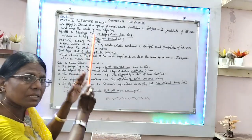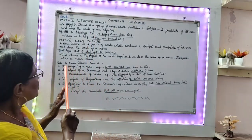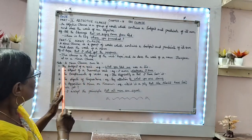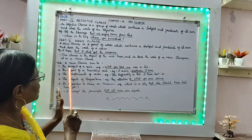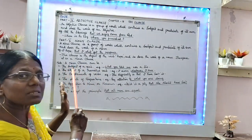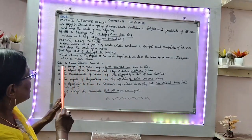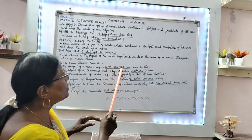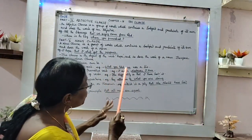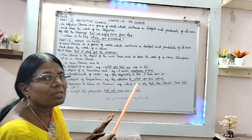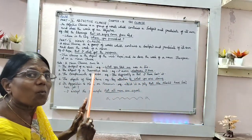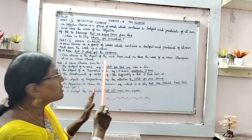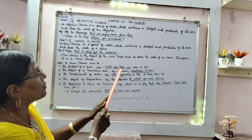Now, in which manner does the noun clause come? It comes as the subject of a verb. Example: 'What you told me was a lie.' Here, 'what you told me' comes as the subject of a verb.